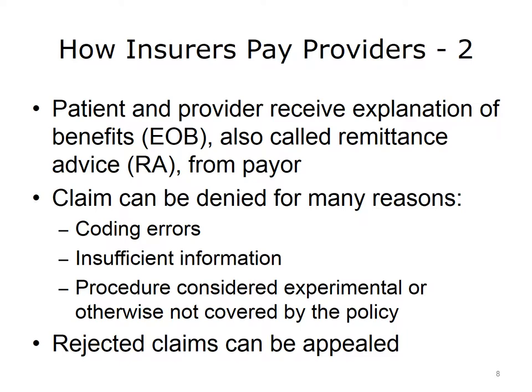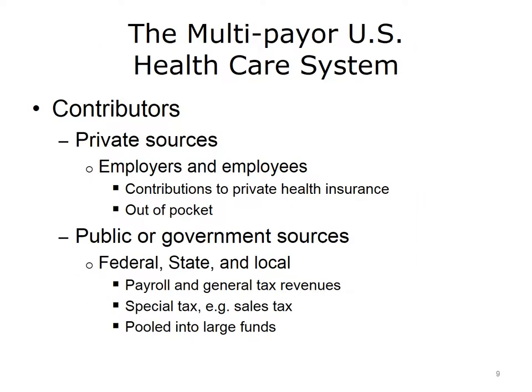Many employer-provided insurance plans have a process for allowing patients to appeal a rejected claim. Under the recent health care reform law, more companies are required to establish this process, as well as allow patients to have a rejected claim reviewed by an independent third party. As mentioned previously, contributors to health care financing include private and public or government sources.